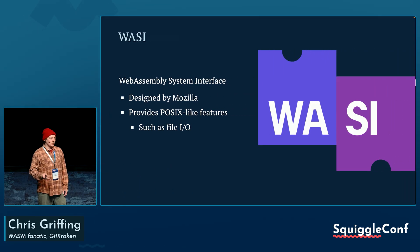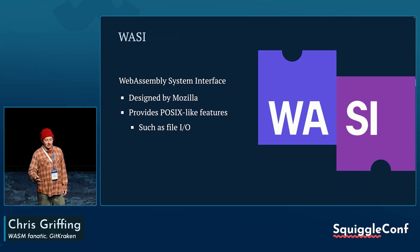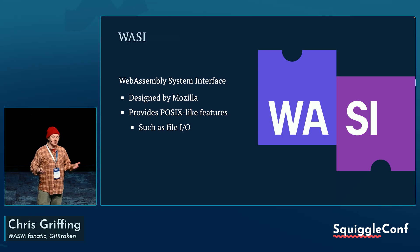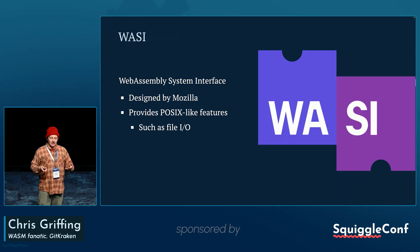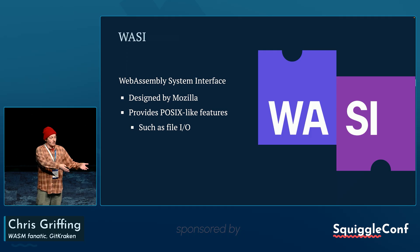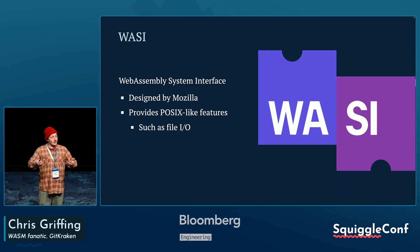When we talk about Wasm, we also have to talk about WASI, which is the WebAssembly System Interface. It was designed by Mozilla and it provides POSIX-like features like the file system or networking — pretty much things you would have to compile for when making binary applications. If you needed to make something that did networking, you would have to write it for Windows, for Mac, for Linux. Instead, Wasm and WASI abstract that away from you, making it a lot more portable.